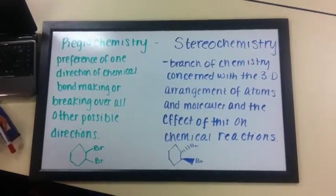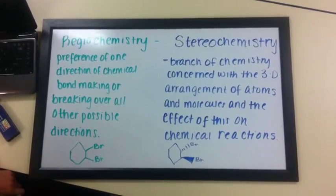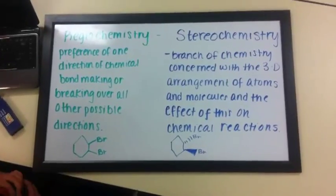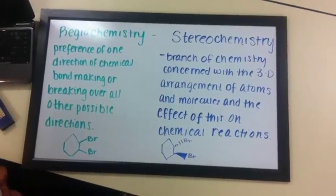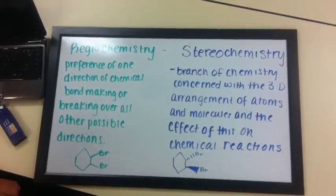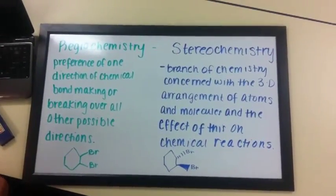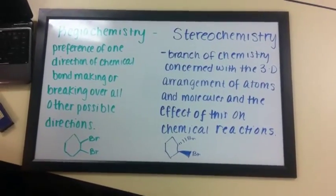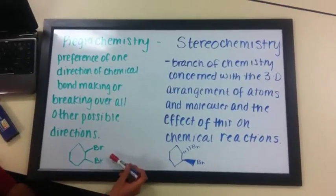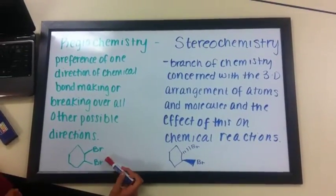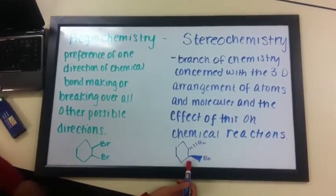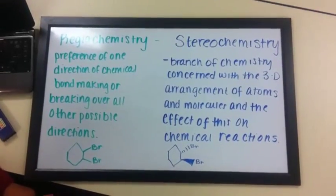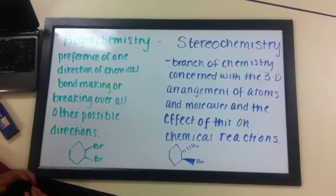Stereochemistry and regiochemistry are used in chemical reaction mechanisms to predict the product or products of a chemical reaction. Regiochemistry is the preference of one direction of chemical bond making or breaking over all other possible directions. Stereochemistry is a branch of chemistry concerned with the 3D arrangement of atoms and molecules and the effect of this on chemical reactions. For regiochemistry, we are not aware of the spatial arrangement, but for stereochemistry, we are aware and must use the back and the front of the atom to display where different atoms on a molecule are.